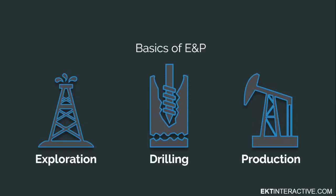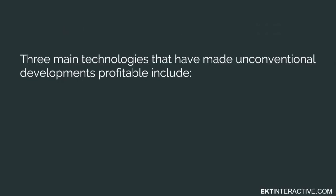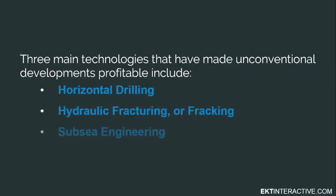We will drill deeper into each of these operations in the complete Oil 101 course at a later date. Now, let's talk about unconventional resources — clearly the hottest topic in oil and gas over the last decade. Unconventional resources are defined as any resource extracted or produced by any method other than the traditional vertical or slightly deviated well. Three main sources of technological breakthroughs that have made unconventional developments profitable include horizontal drilling, hydraulic fracturing, and subsea engineering, especially deep water production.